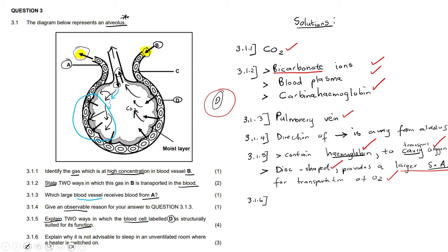Question 3.1.6 asks us to explain why it is not advisable to sleep in an unventilated room where a heater is switched on. An unventilated room is an isolated space with no windows or openings to allow fresh air in. A heater dries the air — it strips the moisture or water vapour from the air, reducing the humidity of the room.